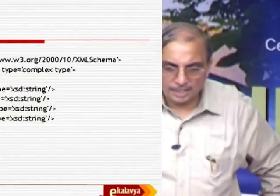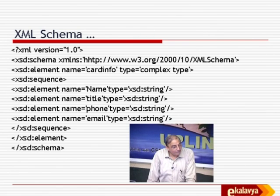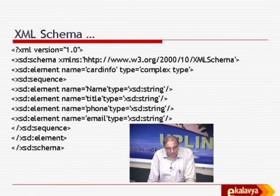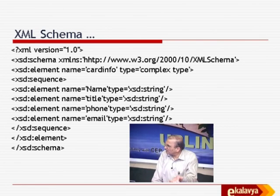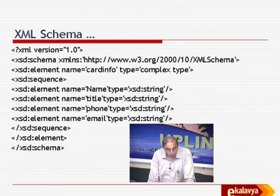Here is an XML schema example. The first line: XML version 1.0. XSD:schema with a namespace http://w3c.org/2000/10/XMLSchema - XSD means XML Schema Definition. Then XSD:element name='cardInfo' type is complex type. XSD:sequence - XSD:element name='name' type XSD:string, XSD:element name='title' type XSD:string, phone type string, email type string - then XSD end sequence, XSD end element, XSD end schema. So I am describing a schema for a visiting card. Card information is complex, and one complexity is that cardInfo will have a sequence of four elements: name (string), title (string), phone (string), email (string).